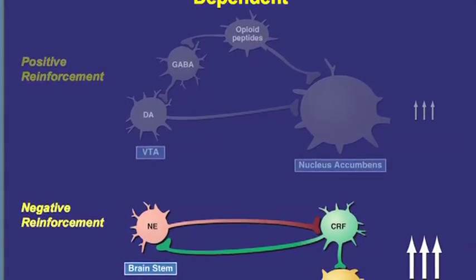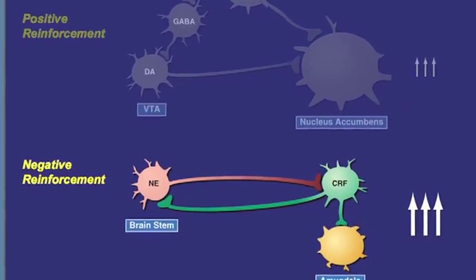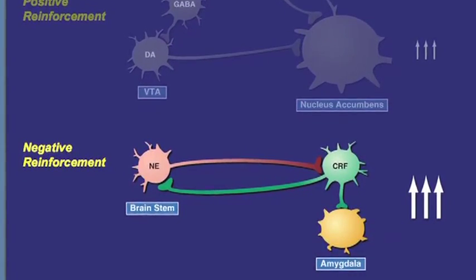The take-home message here is that a really major component of addiction — by no means the only one, but a major one — is that when you're not dependent, you have a functional reward system that works fine, and your negative reinforcement system, your brain stress system, is relatively quiescent. When you're dependent, you lose that normally active reward system and you gain the stress system.